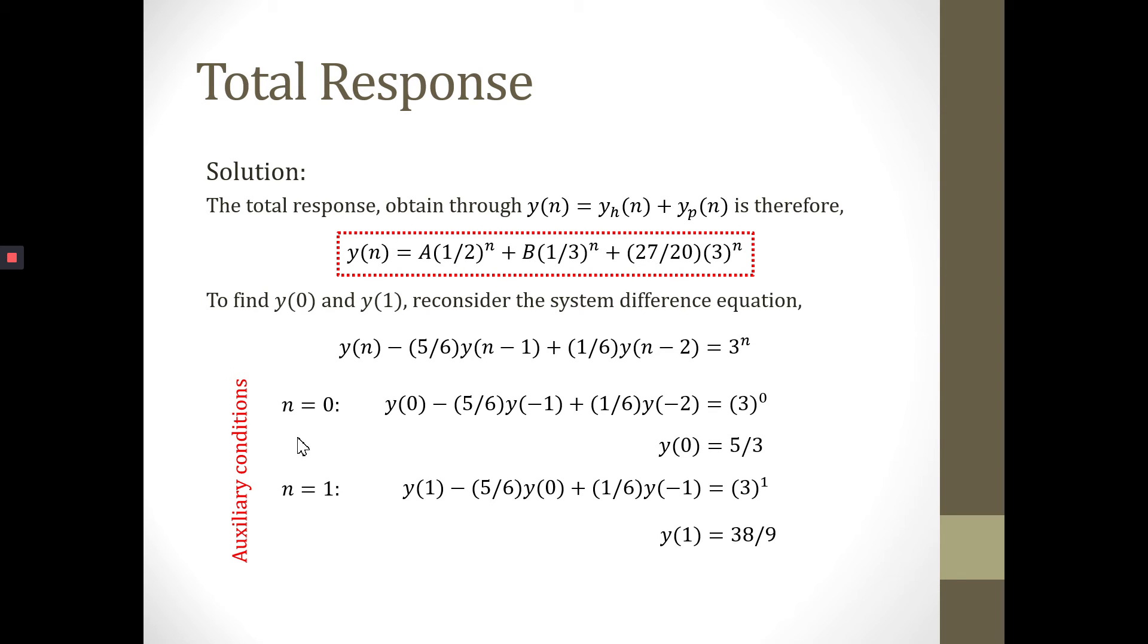We repeat the same technique for N equals 1. We plug N equals 1 into this equation. This is the current equation. For Y(0), we have this value. For Y(-1), we have the value given in the question, which is equal to 1. Now we can solve for Y(1), which equals 38/9.